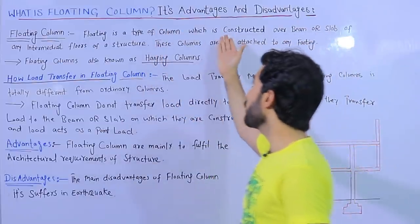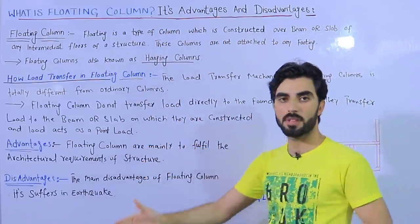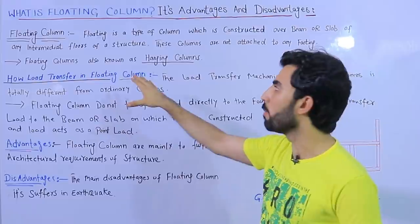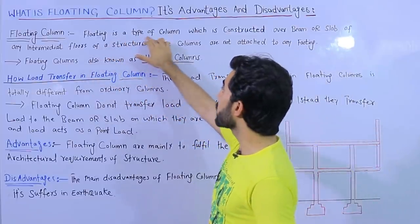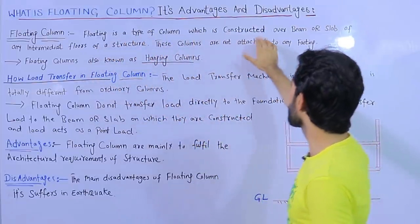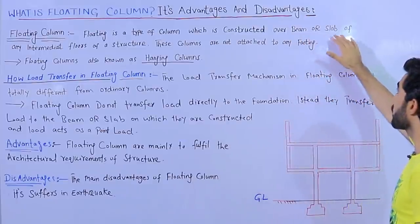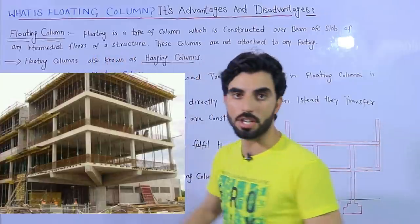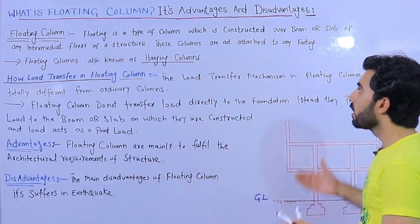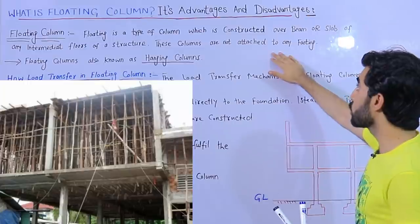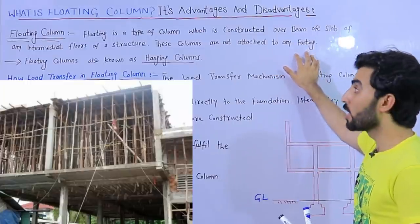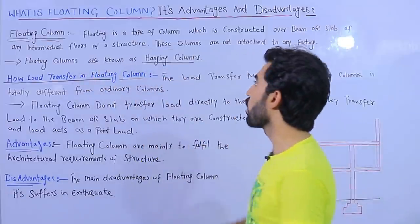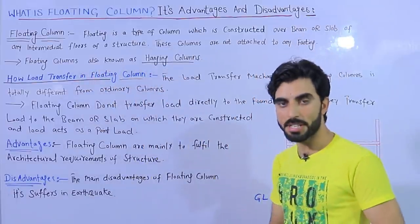The topic is what is a floating column, its advantages and disadvantages. A floating column is a type of column which is constructed over the beam or slab of any intermediate floor of a structure. These columns are not attached to any footing, and therefore floating columns are also known as hanging columns.